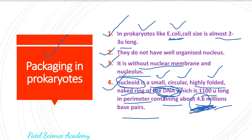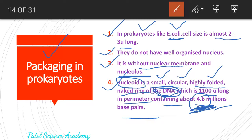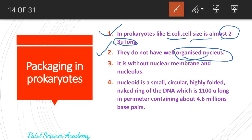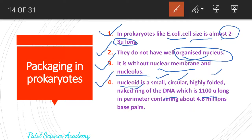This is very amazing for this DNA molecule in the prokaryote. To summarize what we learned: in the prokaryotic cell like E. coli, the size is 2 to 3 micrometers long; they do not have well-organized nucleus; they are without nuclear membrane and without nucleolus; and the nucleoid — a very small, circular, highly folded, naked ring of DNA — is 1100 micrometers long in perimeter, containing 4.6 million base pairs.